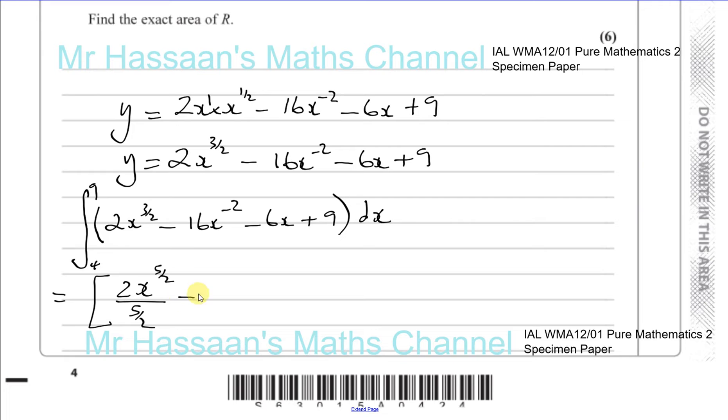Then I've got to add 1 to this power. Now minus 2 add 1 is minus 1. So it's going to be minus 16x to the power of minus 1 divided by minus 1. And I have to add 1 to this power.